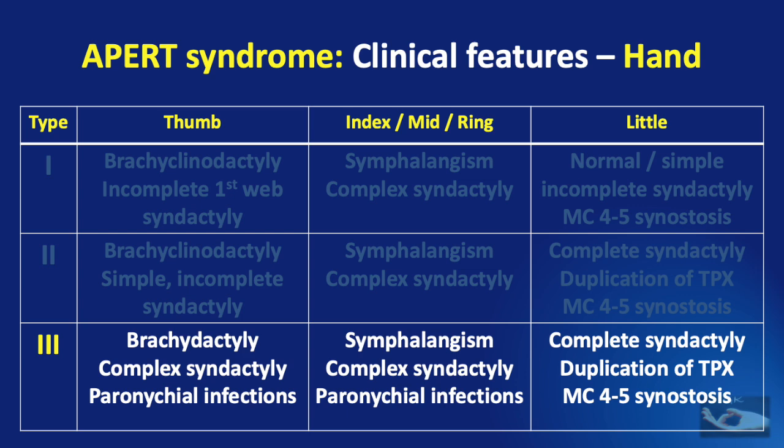In Type 3, the thumb may show brachyclinodactyly, complex syndactyly with the index finger, and recurrent paronychia infections. Similarly, the index, middle, and ring fingers, apart from symphalangism and complex syndactyly, may show paronychia infections. The little finger shows complete syndactyly with duplication of the terminal phalanx, and again synostosis of the base of the 4th and 5th metacarpal bones.